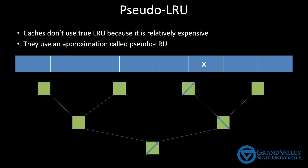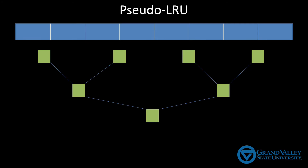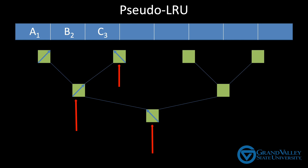This is easier to see if we look at a complete example. So let's start with an empty line in an eight-way set associative cache. The first variable access placed on this line is A — I've marked that block with an A, and the subscript one tells us that's the first access to this block. All three levels of arrows are pointing at A because it's the most recently accessed. Then the next variable we access is B, with subscript two for the second access, and now the arrows point at B. Then we access variable C, the third access. Following the arrows from the bottom, they point at C because it's the most recently accessed. And because the box between A and B isn't on the path to C, it's just left where it was.